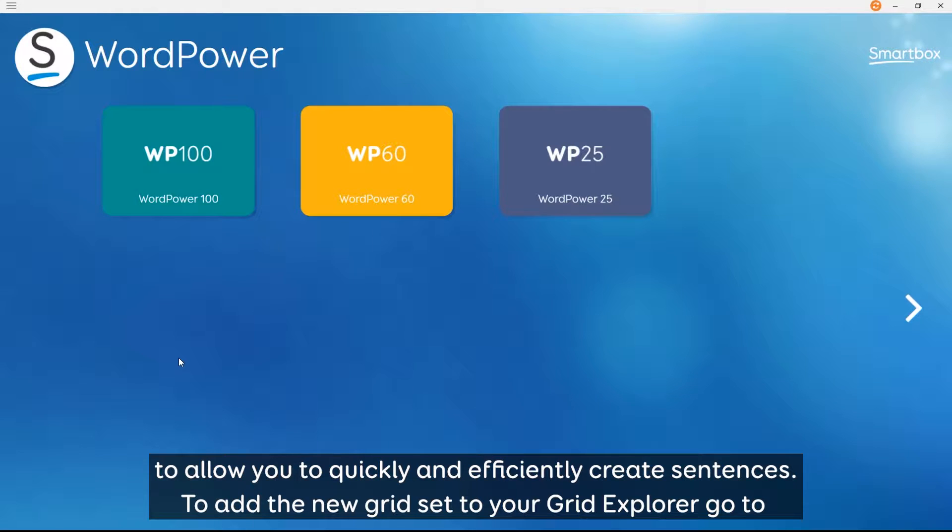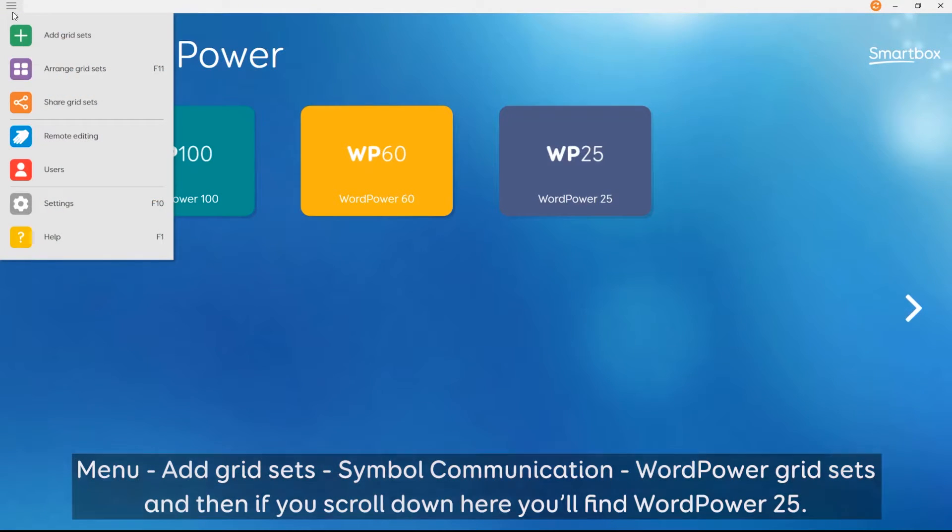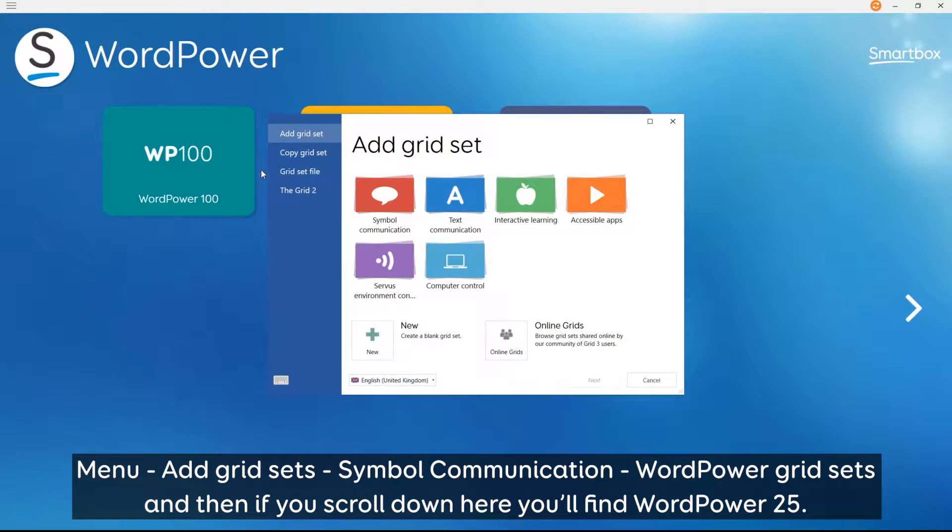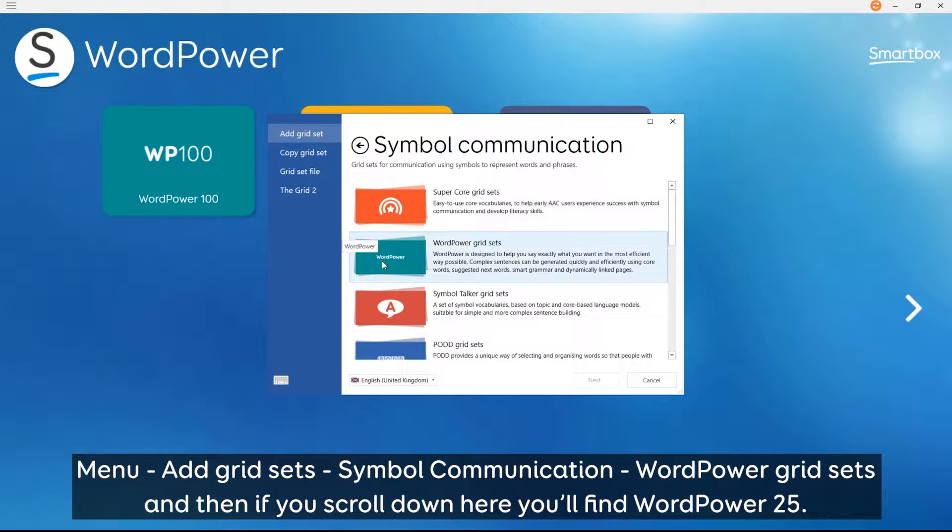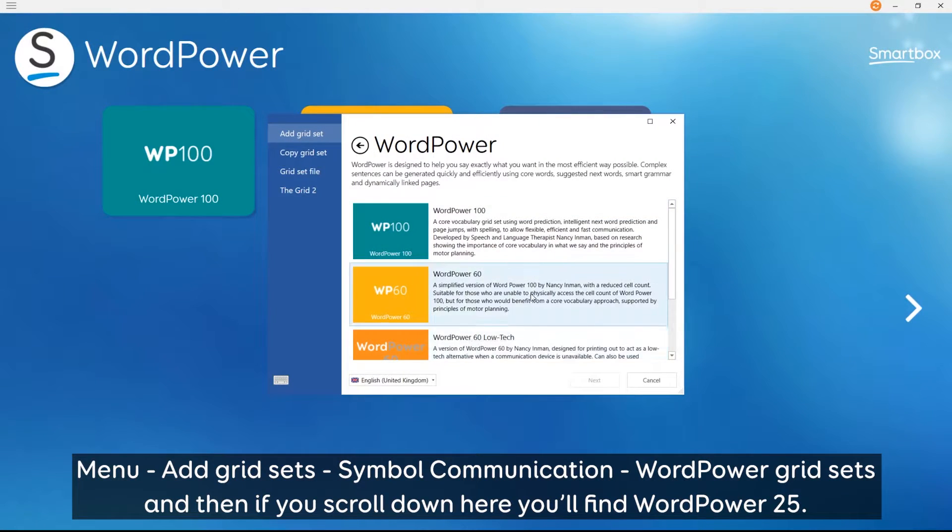To add the new gridset to your Grid Explorer, you can go to Menu, Add Gridsets, Symbol Communication, WordPower Gridsets, and then if you scroll down here, you'll find WordPower25.